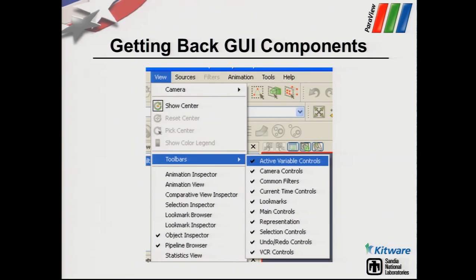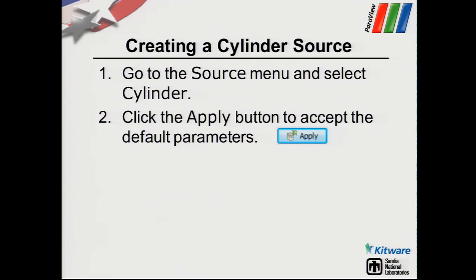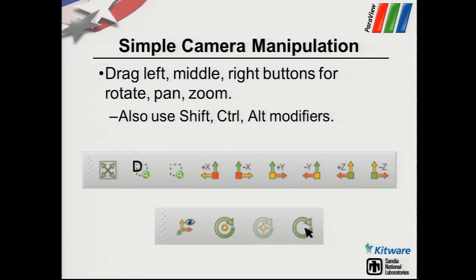We have multiple toolbars to bring up those dockable panels — for example, the selection inspector and the comparative view inspector. Those are tools we will use to set up our views. I'll start simply by creating a cylinder source, then look at the icons available for manipulation of the view.